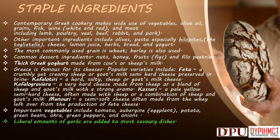Staple Ingredients of Greek Cuisine: Contemporary Greek cookery makes wide use of vegetables, olive oil, grains, fish, wine (white and red), and meat including lamb, poultry, veal, beef, rabbit, and pork. Other important ingredients include olives, pasta — especially hilopites like tagliatelle — cheese, lemon juice, herbs, bread, and yogurt. The most commonly used grain is wheat; barley is also used. Common dessert ingredients include nuts, honey, fruits, figs, and phyllo pastries.